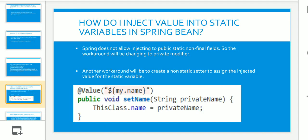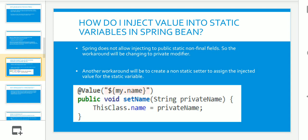The next question was: how do you inject a value into static variables in a Spring bean? This was a tricky question. Spring does not allow injecting into public static non-final fields. The workaround is to change the private modifier appropriately. A sample code snippet is shown in the slide demonstrating how to inject values into static variables.